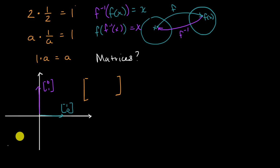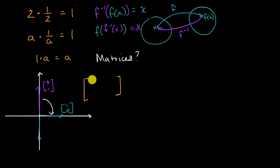If you're doing a 90 degree clockwise turn, then the one-zero unit vector is going to go right over here and be turned into the zero negative-one vector. So we'll write that right there. And then the zero-one vector is going to be turned into the one-zero vector. This is the 90 degrees clockwise transformation matrix.